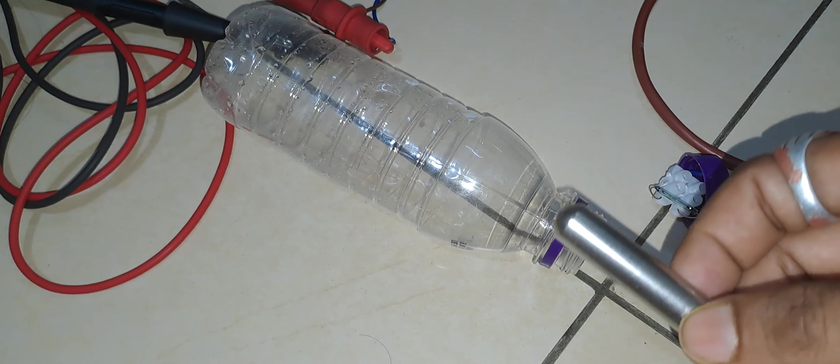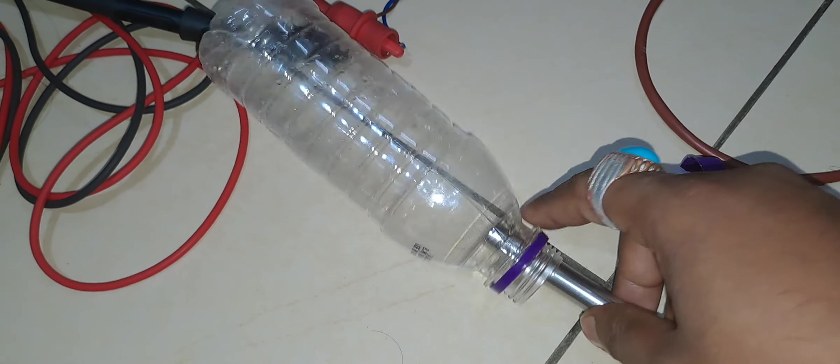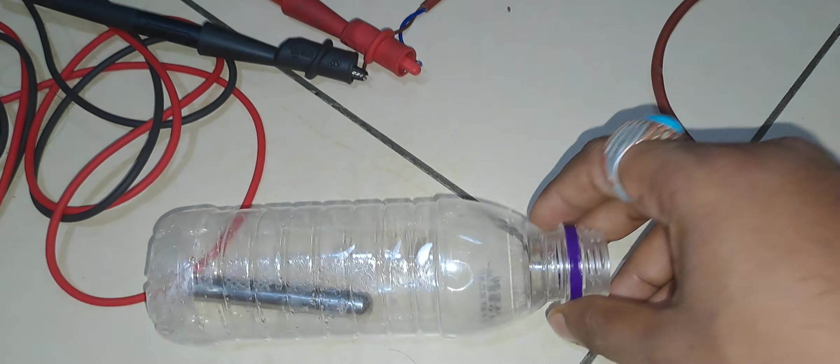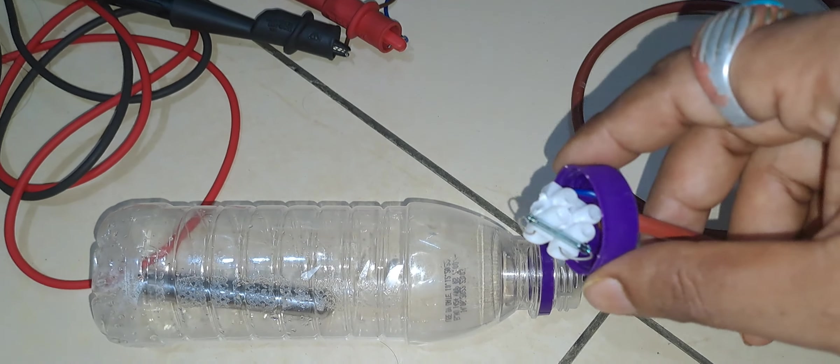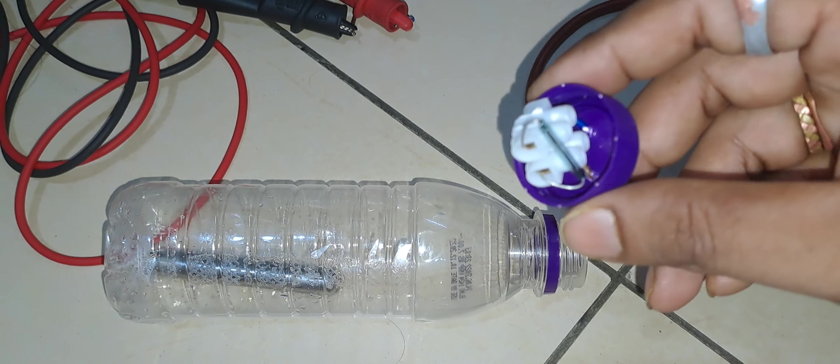So now for making this float, I'm using the bar magnet inside this bottle. This setup, as you can see, is just a simple reed switch with a connector.